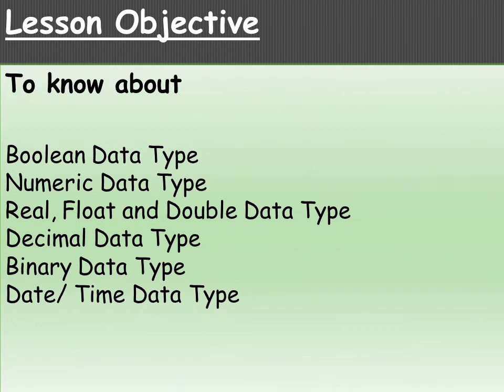Today's lesson objective is to learn more about data types. In this tutorial we will learn about boolean data type, numeric data type, real, float and double data type, decimal data type, binary data type, and date and time data type. At the end of the discussion you will have a practice question where you will identify the data type for different fields.